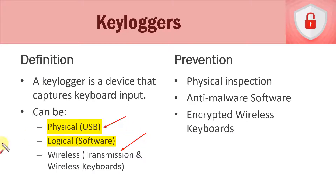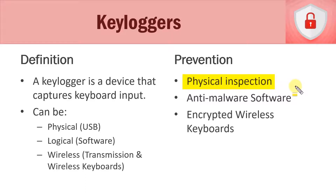To protect ourselves from key loggers, the first thing is physically inspecting our machines. If we have a device we're going to be inputting sensitive data on, we might go in every morning and check that the connection from our keyboard goes directly into the computer with no key logger attached. In addition, we could physically secure our desktop machines — putting them in a secure rack or a desk with a cabinet that locks closed so nobody can gain access to those ports.